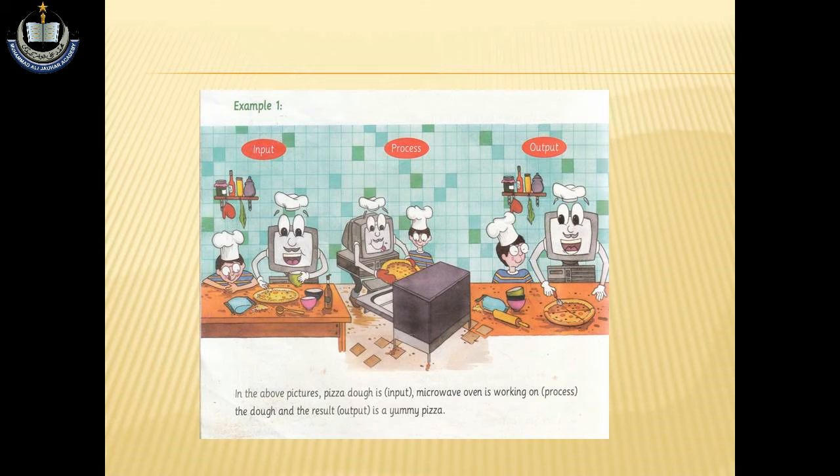جب ہم ایک pizza بناتے ہیں تو سب سے پہلے اس کی dough بناتے ہیں۔ ڈو بنانے کے بعد اس کے اوپر ہم پیزے کی لیرز لگاتے ہیں اور اس کو microwave oven کے اندر input کر دیتے ہیں۔ Microwave oven on کرنے کے بعد اپنا کام سٹارٹ کر دیتا ہے۔ جتنی دیر میں مائیکروویو میں پیزہ تیار ہوتا ہے وہ سارا عمل process کہلاتا ہے۔ جب ہمارا پیزہ تیار ہوتا ہے تو مزیدار yummy پیزہ تیار ہو جاتا ہے، وہ output کہلاتا ہے۔